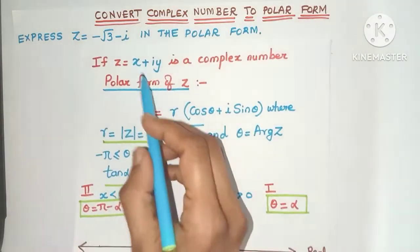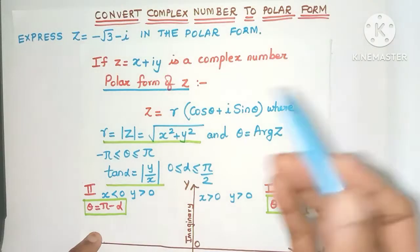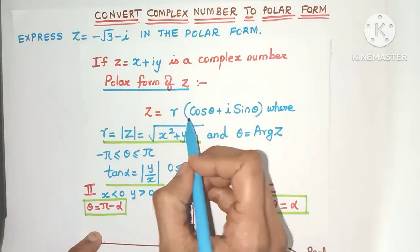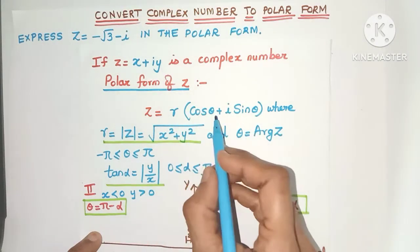So the formula is: if z = x + iy is a complex number, then in the polar form it can be written as r(cosθ + i sinθ). Where what are r and theta?